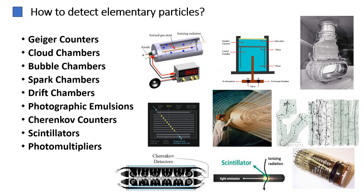Knowing how they are produced, how then do we detect elementary particles? Elementary particles can be detected through Geiger counters, cloud chambers, bubble chambers, spark chambers, drift chambers, photographic emulsions, Cherenkov counters, and scintillators and photomultipliers.